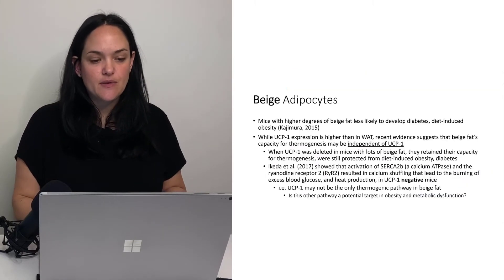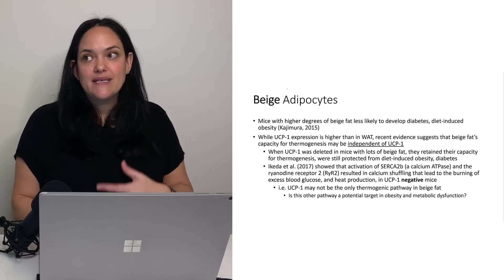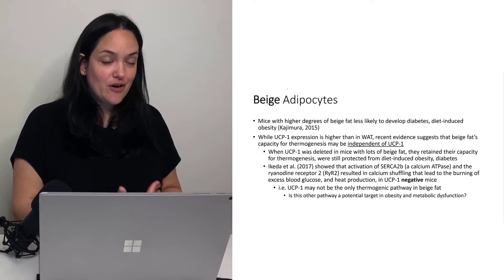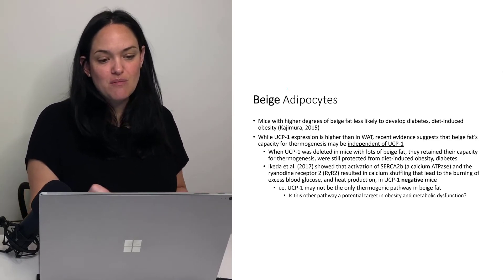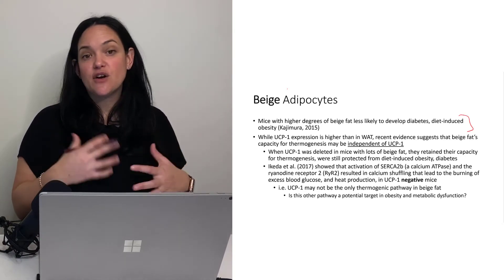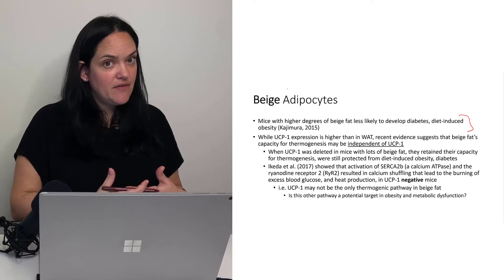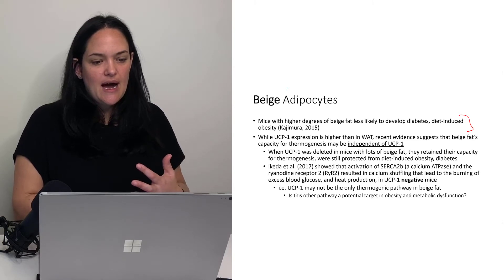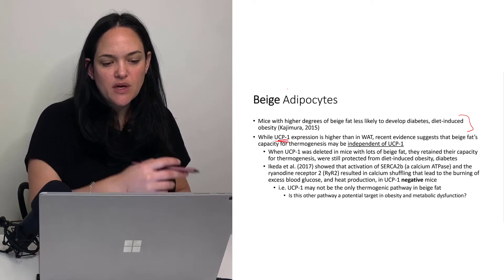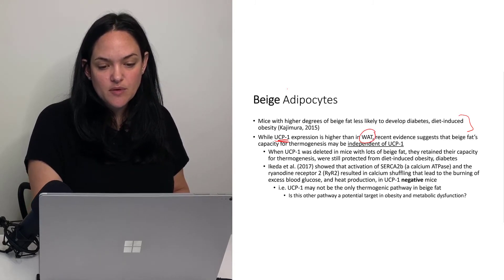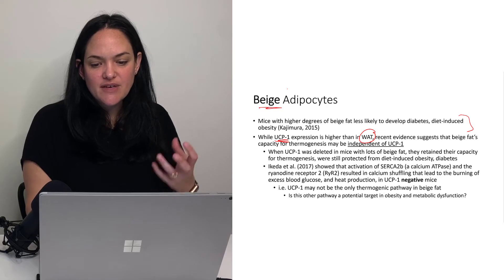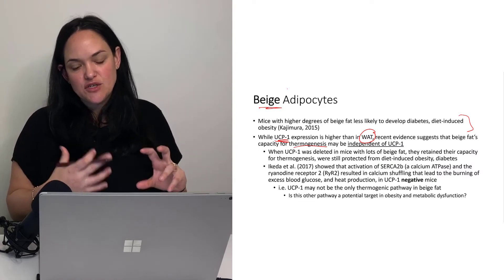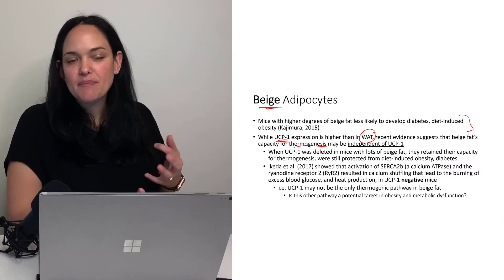As far as what this means for health, a lot of studies on beige adipocytes are hard to conduct so we often do them in animals. Mice with higher amounts of beige fat are less likely to develop diabetes and less likely to develop diet-induced obesity, which makes sense given what we know about brown fat. While UCP1 expression is higher than in white adipose tissue in beige tissues, evidence suggests that beige's capacity for thermogenesis might not be entirely dependent on the presence of UCP1 — there might be something else going on there as well.